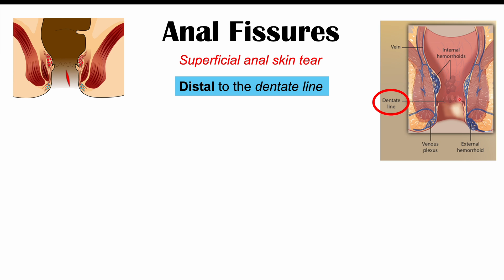The dentate line is where the endoderm meets the ectoderm. You can think of it as the internal gastrointestinal system meeting the external skin or external dermatological environment — where those two tissues meet. That's the dentate line, otherwise known as the pectinate line. Anal fissures occur below that line.